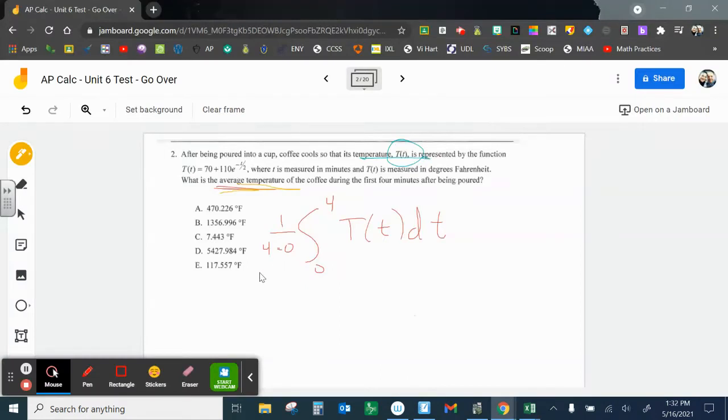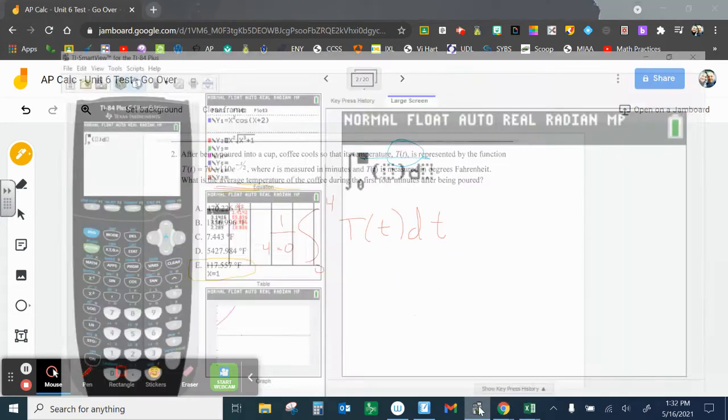Okay, so all you got to do is put it in your calculator, and then when you get that final answer, it's 1 over 4 minus 0, and then that's going to give us what the average value of the function is, and it comes out to, I believe, this 117. Okay? So let me see if I can get that to work right now.